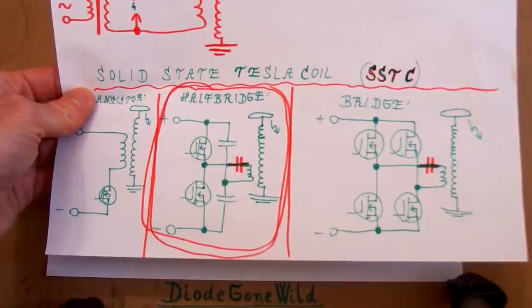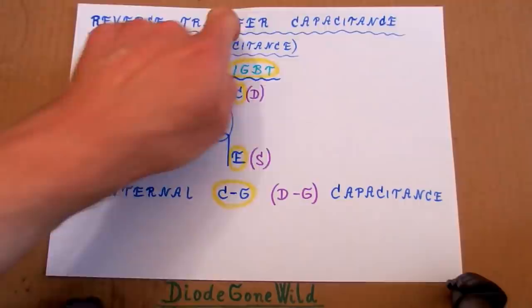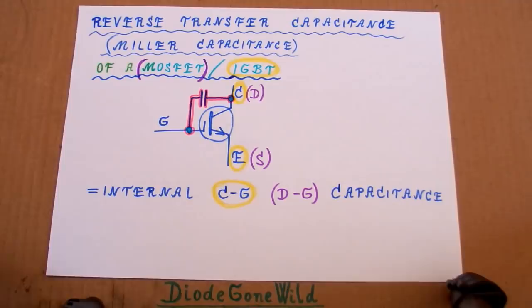Today let's make another episode of my solid state Tesla coil series. I have to explain what's a so-called reverse transfer capacitance, also called Miller capacitance.